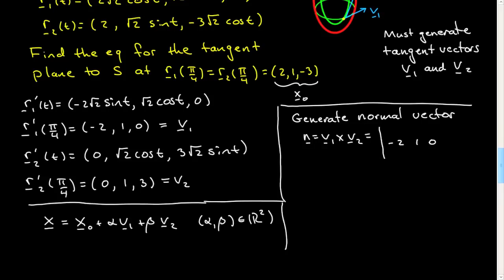What is V1? V1 is (-2, 1, 0). V2 is (0, 1, 3). So far I don't seem to make any mistakes. Doing that cross product, that looks like I get 3i, 6j, and looks like -2k. I'm going to go ahead and write this now without the i, j, k as (3, 6, -2).